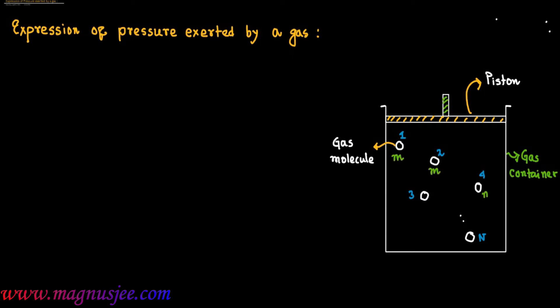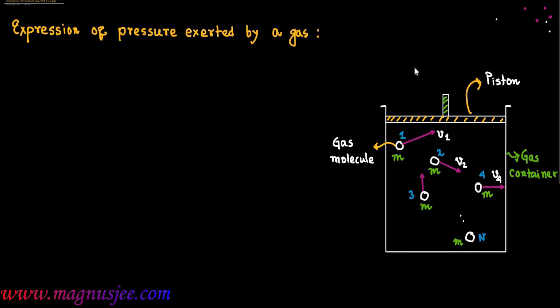The mass of each gas molecule is small m. These gas molecules are moving with different speeds in different directions. V1, V2, V3, V4... Vn are the velocities of the different gas molecules.